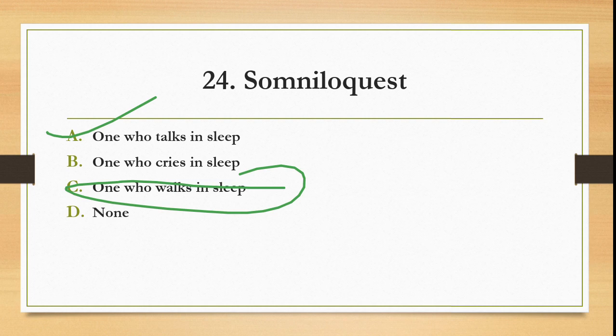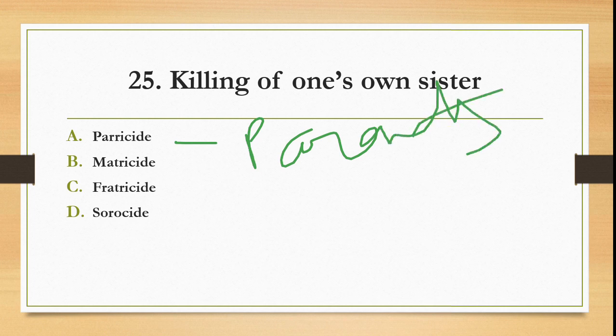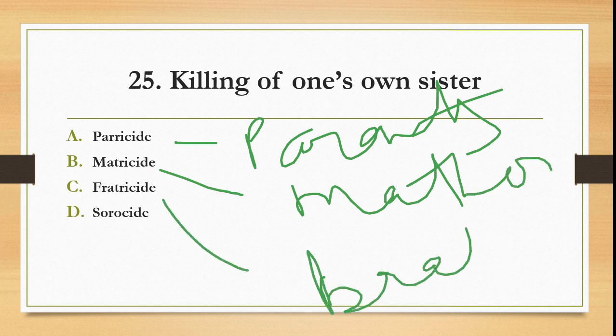Killing of one's own sister. Not parricide - parricide is killing of parents or relatives. Matricide is mother's killing. Fratricide is brother's killing. So the answer is D option - sororicide, which is killing of sister. These are today's 25 questions. I hope you liked the session. If you liked it, please share and like. Don't forget. Bye.